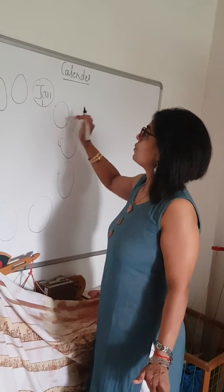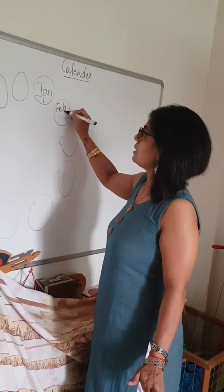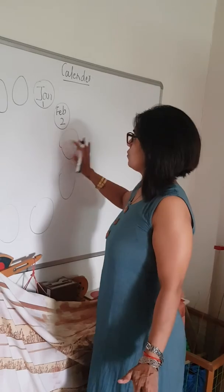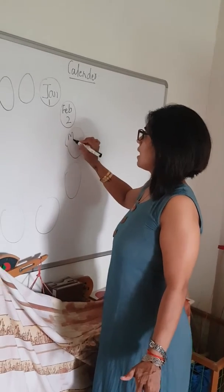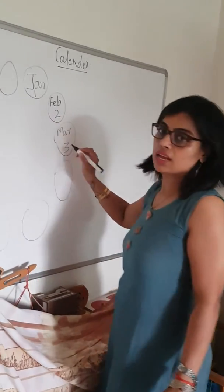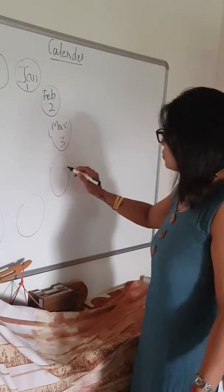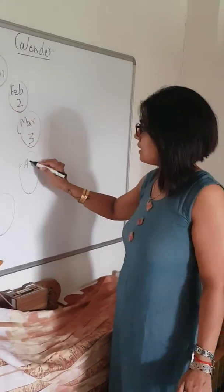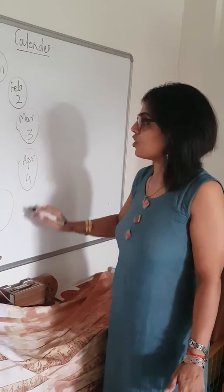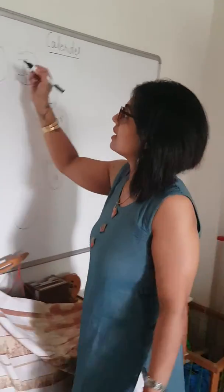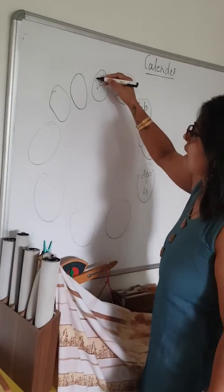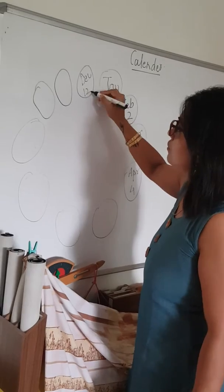Then you do F-E-B and put 2. Then you do M-A-R and put number 3. Then A-P-R and 4. So on and so forth until D-E-C and the number 12.